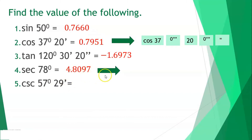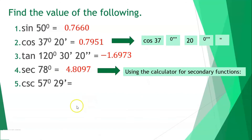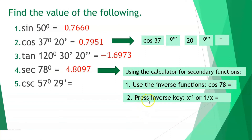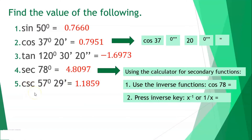To compute secant using a calculator — since secant is a secondary function — use the inverse function key. The inverse of secant is cosine, so press cos(78°), then equals, then press the inverse key (x⁻¹ or 1/x), then equals. You will get 4.8097. For cosecant 57°29', the inverse of cosecant is sine, so use sine accordingly.